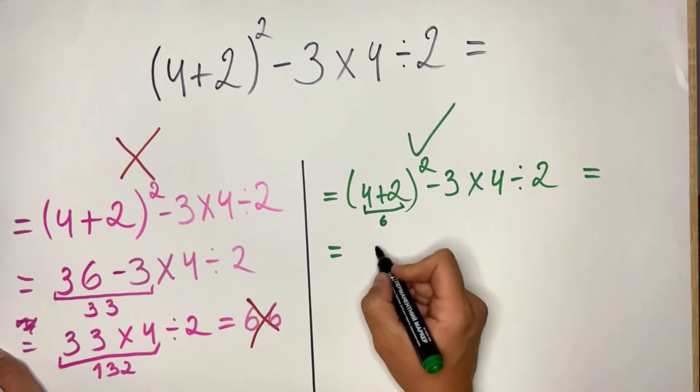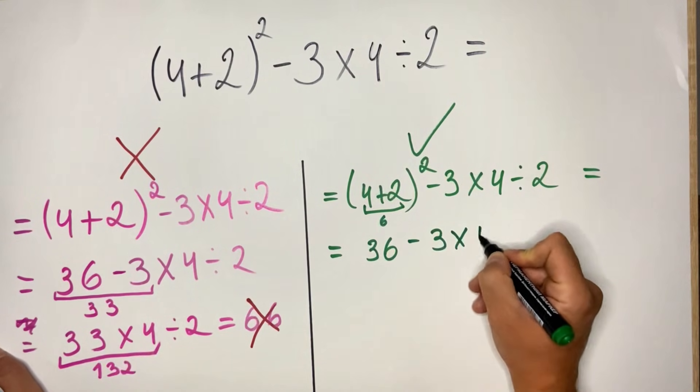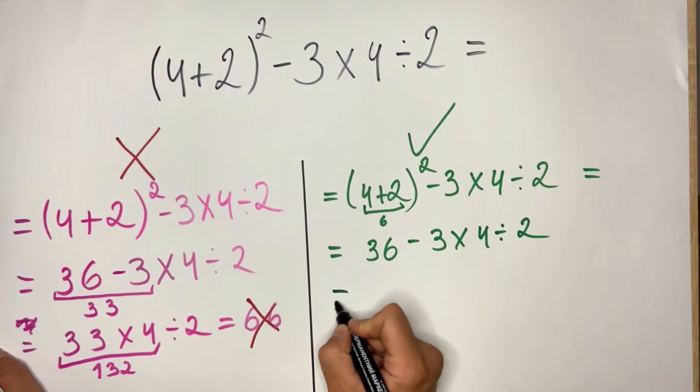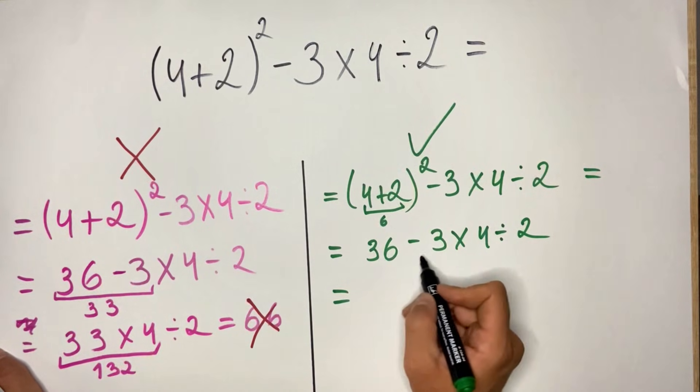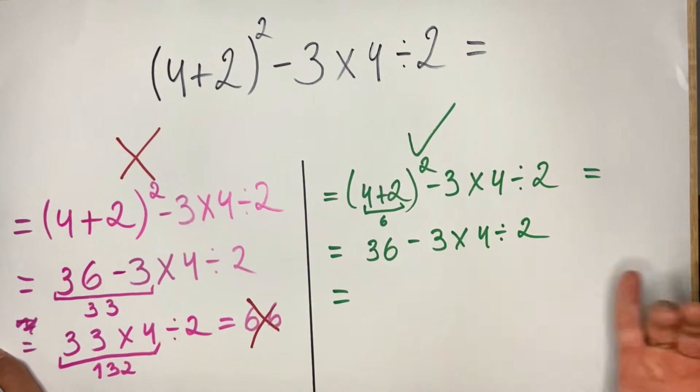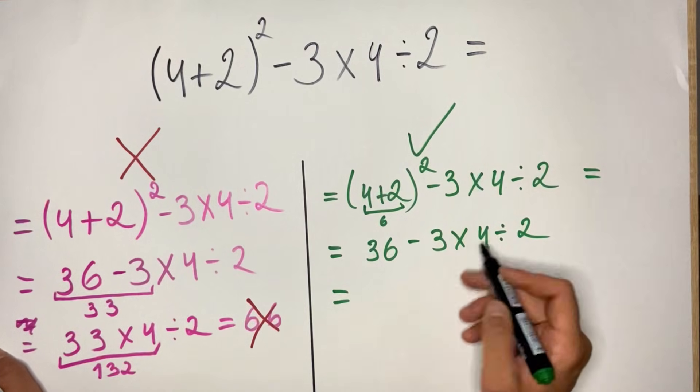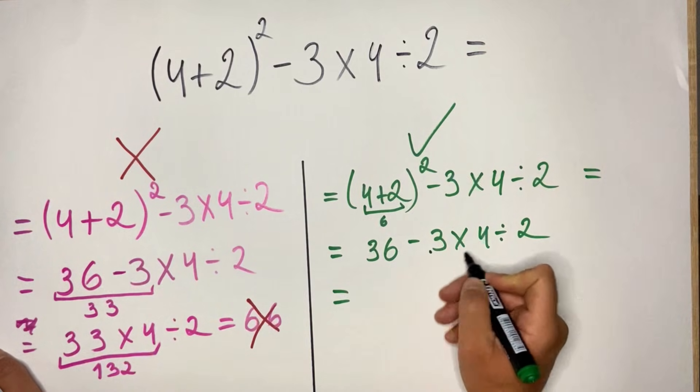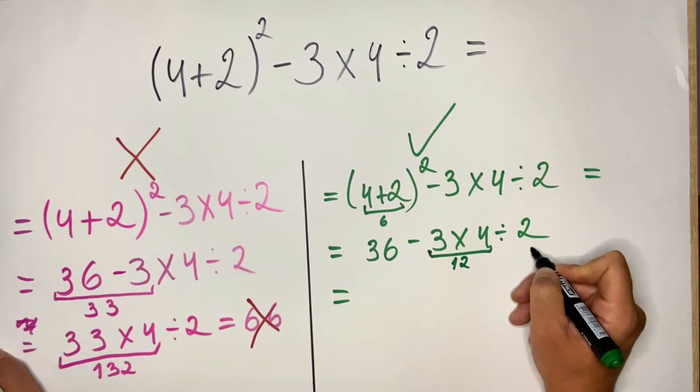We don't do 36 minus 3 because after the parentheses and exponents, we have multiplication and division. So we do from left to right: 3 multiplied by 4 is 12, divided by 2 is 6.